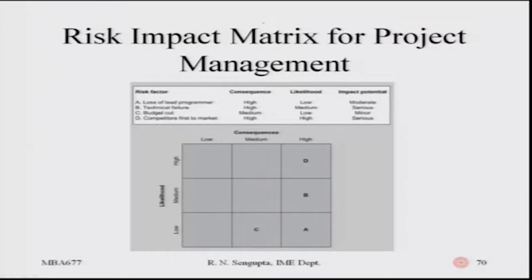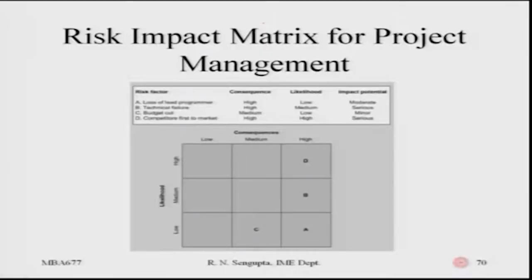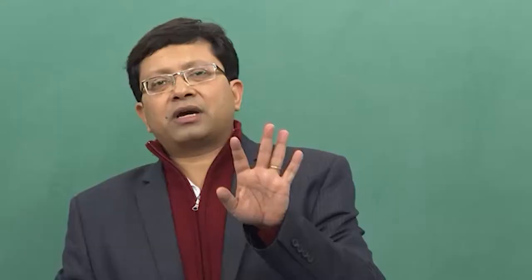You will have the consequence and the likelihood of how the project is being implemented. If you look at the matrix, the y-axis is the likelihood and the x-axis on the top portion shows the consequences. There are nine different cells which are combinations ranging from low-low to high-high. I will request my students to pause here for one minute.